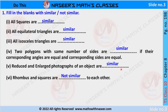Fifth, reduced and enlarged photographs of an object are similar. Because if we have a photograph and we reduce it, their corresponding angles are the same and their corresponding sides are in the same ratio. Similarly, when we enlarge the photograph, the angles are the same and the corresponding sides are in the same ratio.